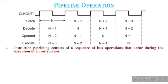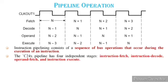Instruction pipelining consists of a sequence of bus operations that occur during the execution of an instruction. The C24x pipeline has four independent stages: instruction fetch, instruction decode, operand fetch, and instruction execute.